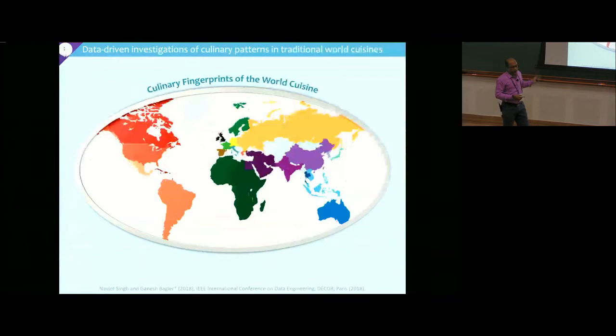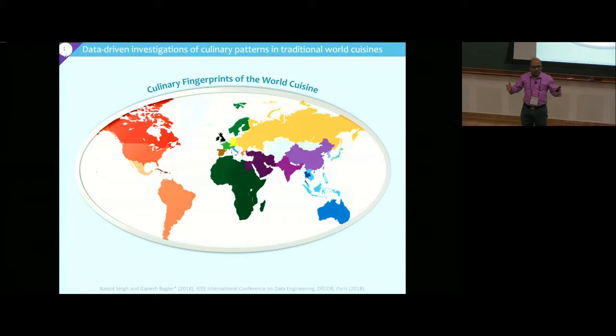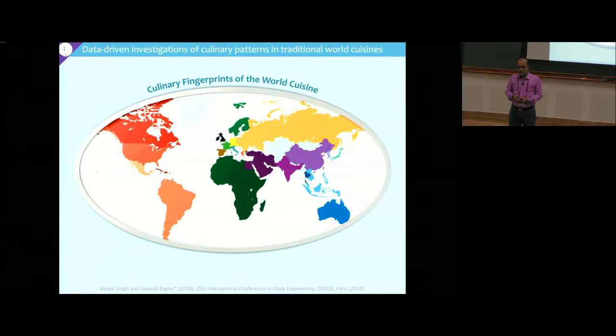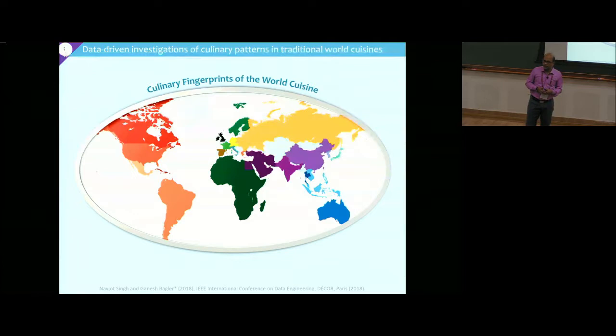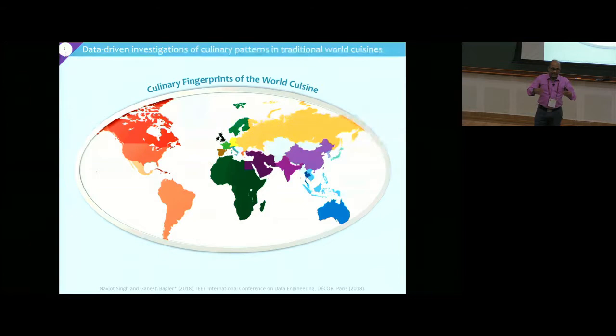At the level of recipes, another data challenge was: where is the recipe data? Huge numbers of recipes are locked in local cultures, households, and communities, and not much is openly available. So we started compiling recipes from online repertoires as well as offline sources like books. Right now we have around 160,000 recipes belonging to 24 different geocultural regions, covering approximately 72 countries. We also have the flavor molecule data from each ingredient as exhaustively as possible.